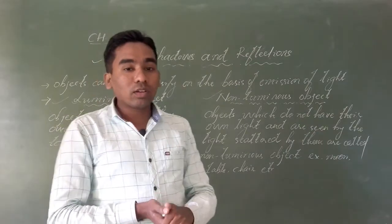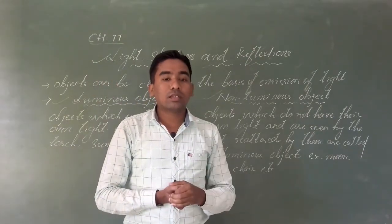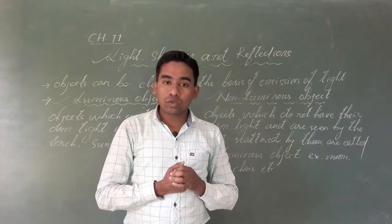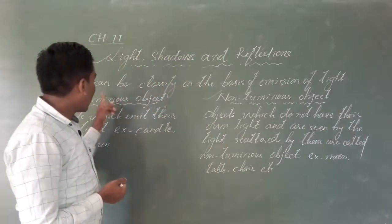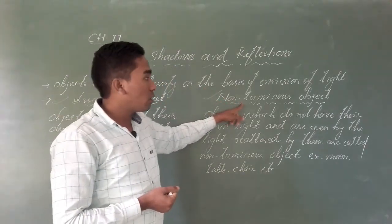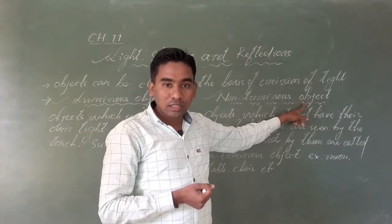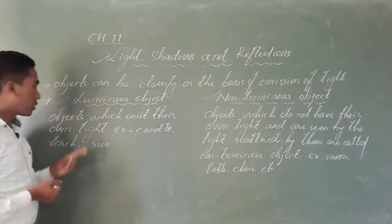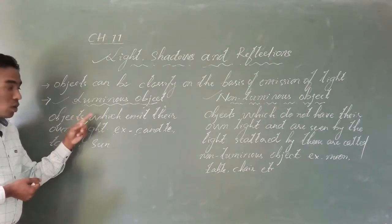According to the emission of light, objects can be categorized into two types: one is the luminous object, and the second one is the non-luminous object.